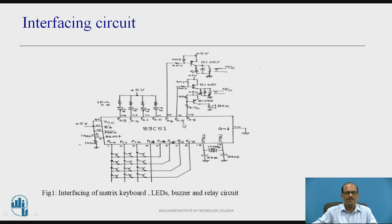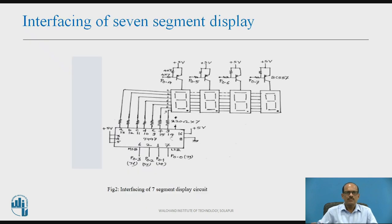This is the interfacing circuit for switches, LEDs, relay and buzzer. And this is the circuit for interfacing of 7-segment display. Here, common anode 7-segment displays are used — 4 displays are used, as shown in figure. This is a PNP transistor, so this is a digit driver circuit.